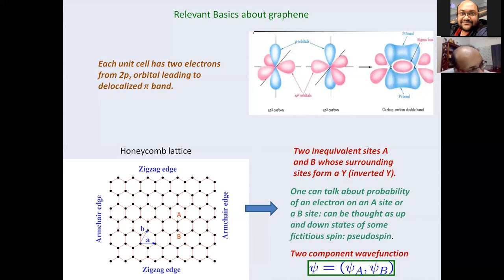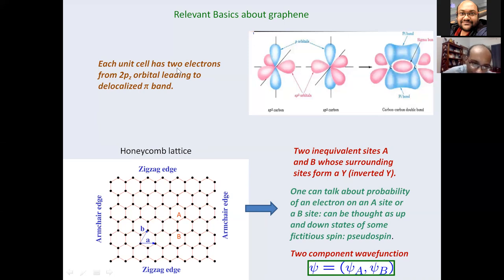A question was raised: does the pseudospin information need to be encoded in the wavefunction? Yes, that's right. A further question asked whether this is an infinite lattice system — for most of the discussion, yes, it is infinite. But you can truncate it to have edges: zigzag edges, armchair edges, or something in between. These edges have properties — electrons have specific localized states at the edges — but that will not be discussed in this talk.